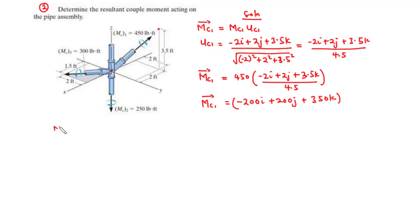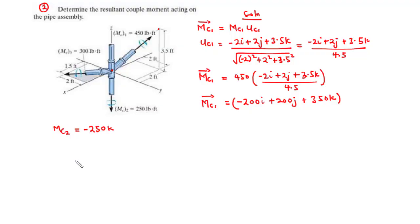For MC2: it is directed only along the Z axis, specifically along the negative Z axis. Therefore MC2 = -250k.